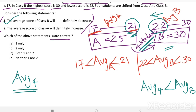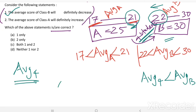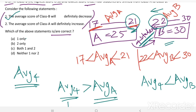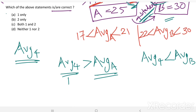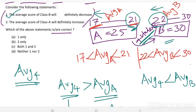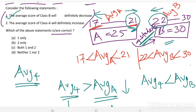When four students shift from class A to class B, if the average of those four students is greater than the average of class A, those students were well-performing, so class A's average will decrease. If their average is less than class A's average, they were poorly performing, and class A's average increases.